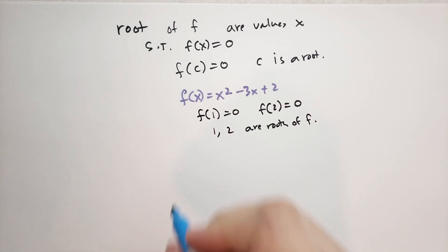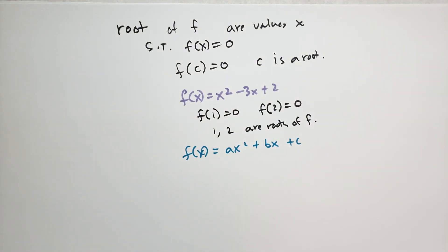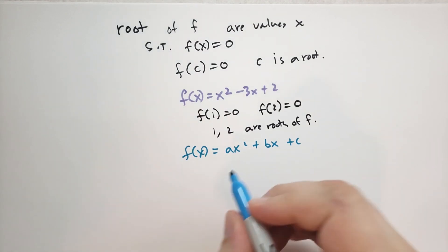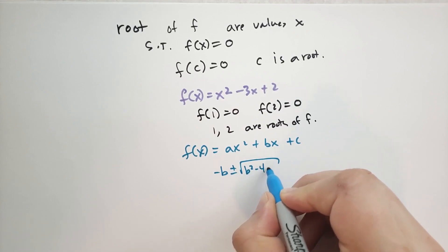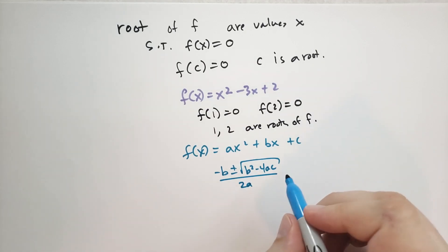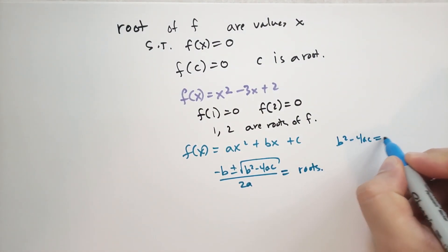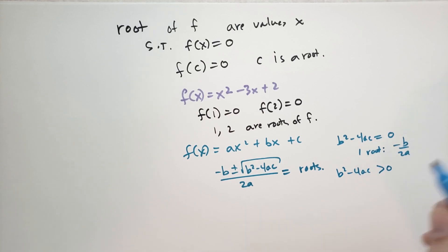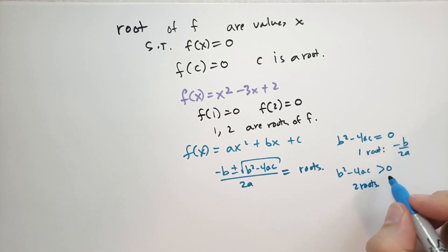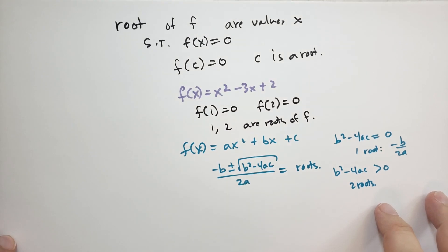Another example: let f(x) = ax² + bx + c. To find the roots we use the quadratic formula: x = (−b ± √(b² − 4ac)) / 2a. If b² − 4ac = 0 there is exactly one root, −b/2a. If b² − 4ac > 0 there are two roots. If b² − 4ac < 0 there are no roots. We studied this back in chapter 4 when we learned about solving quadratic formulas.